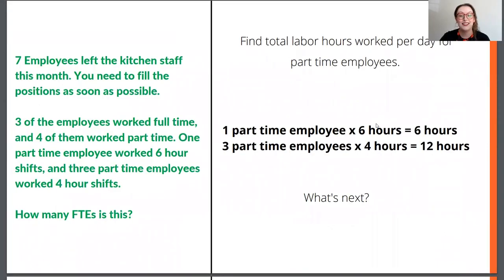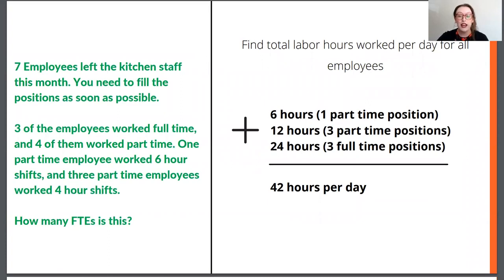Next, we want to find the total labor hours worked per part-time employee. We have one part-time employee working six hours a day — one times six is six hours. Three part-time employees are working four hours a day — three times four is 12 hours. We then add together all of the labor hours worked per day for all employees, both full-time and part-time: six plus 12 plus 24 gives us 42 hours per day total.